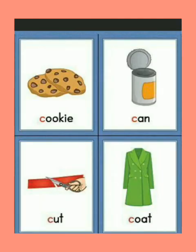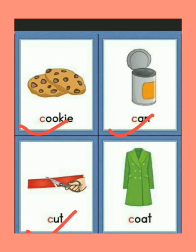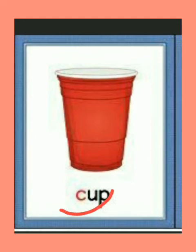Apart from this we have some more words which have the same pronunciation of the letter C. Iske alawa kuch aur aise shabd hain jinmen aisi hi C ka ucharan hota hai. So let's start. C for cookies. C for can. C is for cut. C is for coat. C for cup. The spelling of cup is C-U-P. Next. C for cap. C-A-P. Cap means topi.